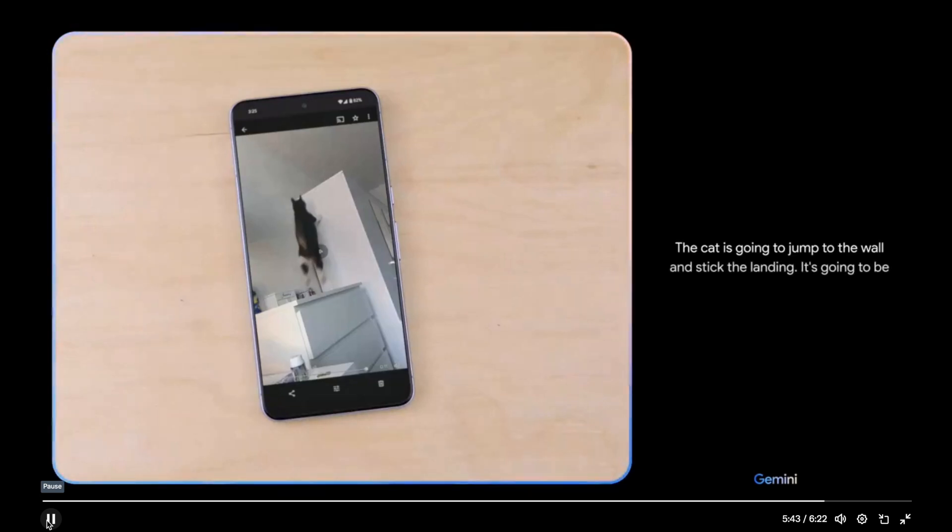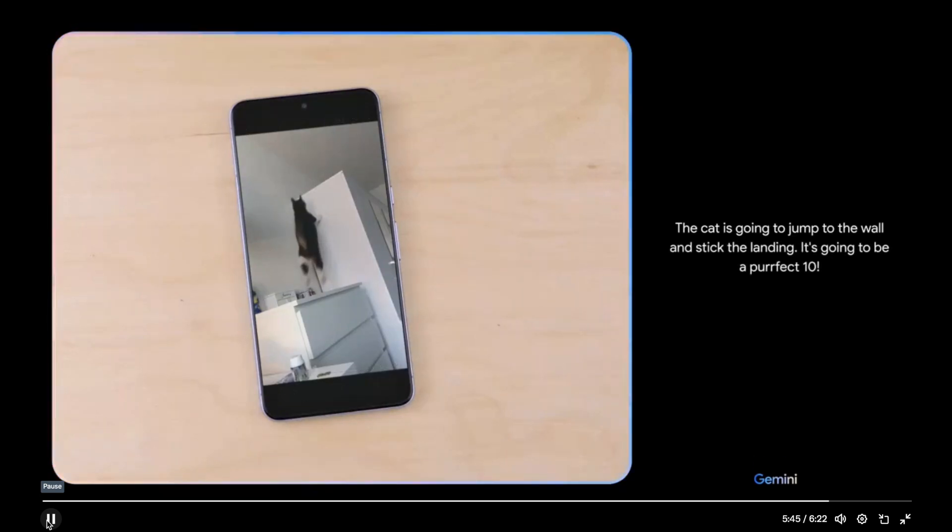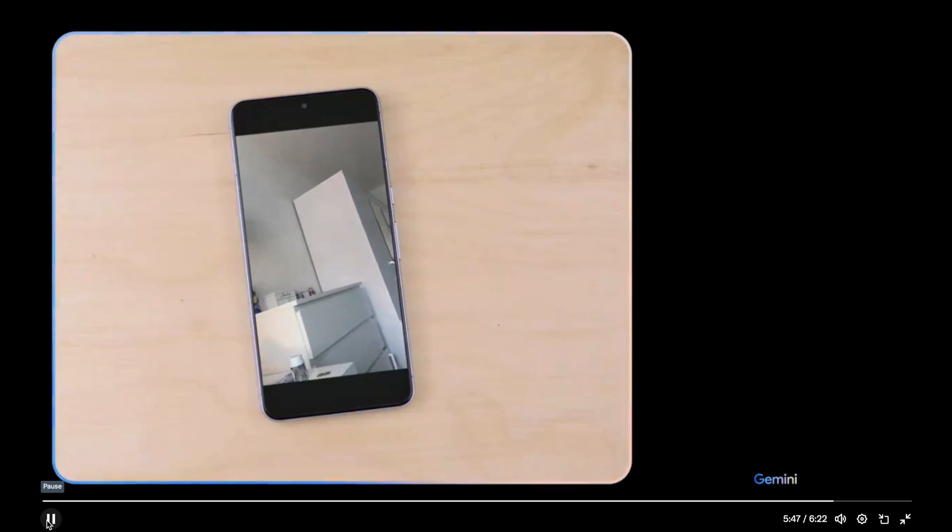What do you think might happen next? The cat is going to jump to the wall and stick the landing. It's going to be a perfect 10. Oh, and it's a miss. It looks like it was just a little too far away. But don't worry. The cat is a natural athlete and it will be back up there in no time.